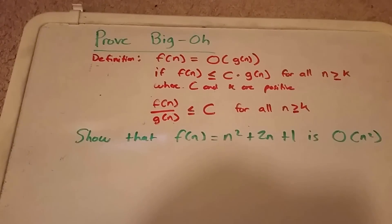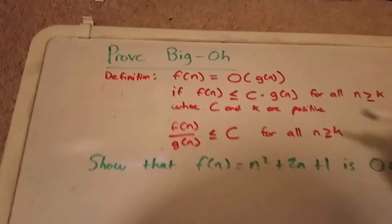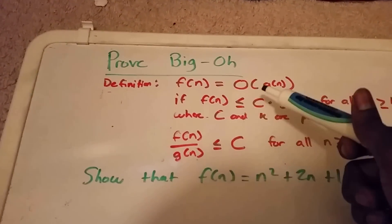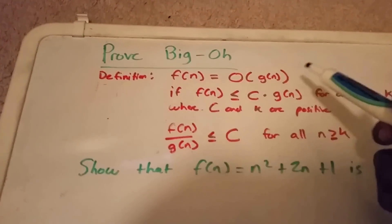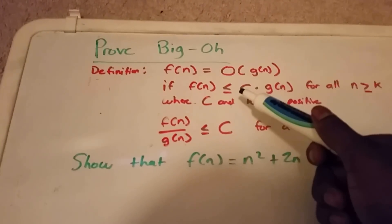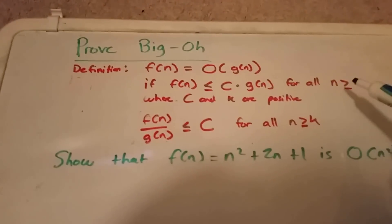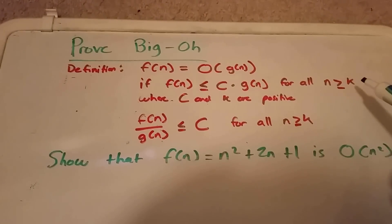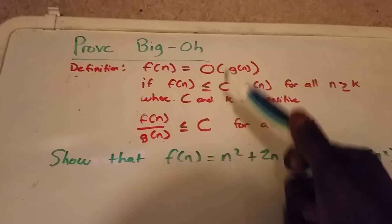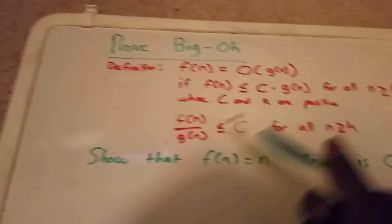So here I wrote down a definition. You have f of n belongs to O of g of n, if f of n is less than or equal to some constant c times g of n, for all n greater than or equal to some constant k, where c and k are positive constants.